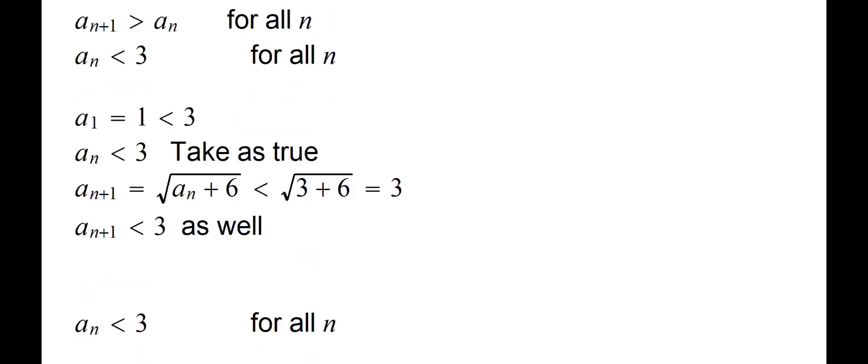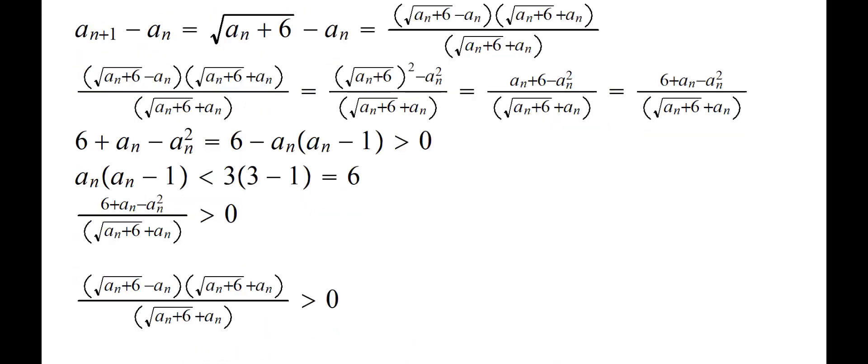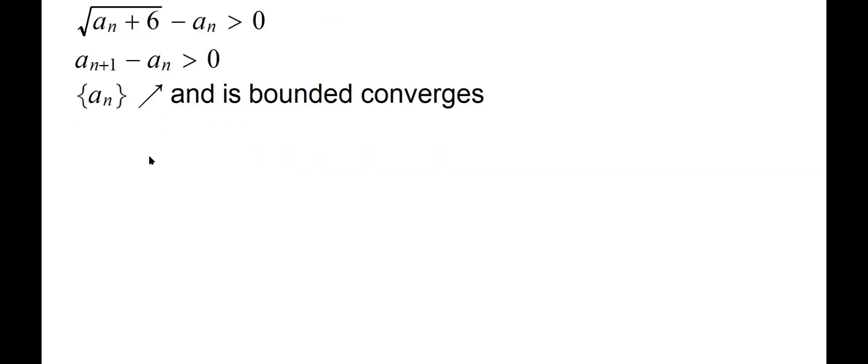For such cases, we have a universal method. Notice this, what we have deduced is that it converges. So if aₙ converges to L, then as we did in the beginning of this chapter, a_{n+1} will converge to L as well. And so what will this equation employ? That L equals a square root of L plus six. And I'll let you examine that L equals three is the only solution.